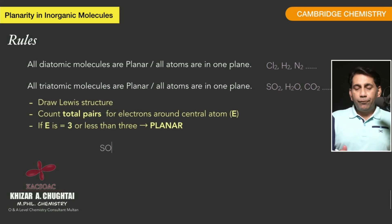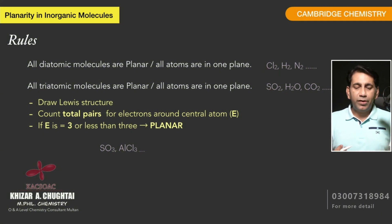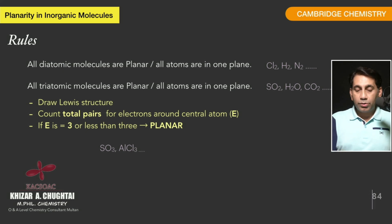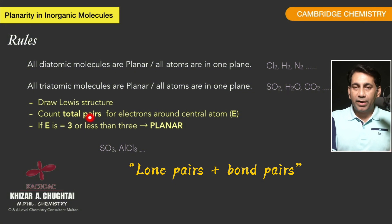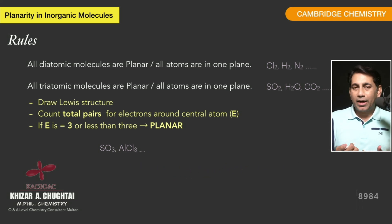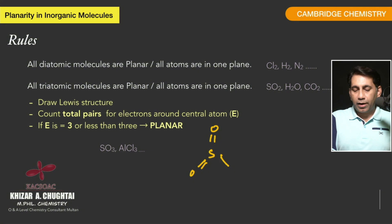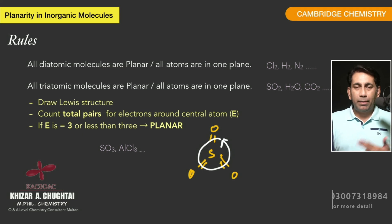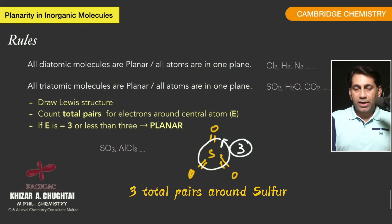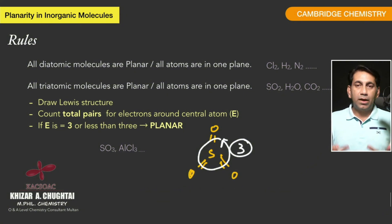Rule number three: if the molecule is having more than three atoms, draw the Lewis structure, then count the total pairs around the central atom. If the total pairs around the central atom is equal to three or less than three, then this molecule will be planar. For example, in the case of SO3, looking at the Lewis diagram: there are three pairs — a double bond counts as one pair — so overall three pairs are surrounding the central atom. It means this molecule is a planar molecule.